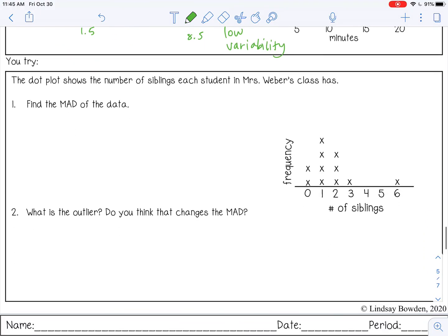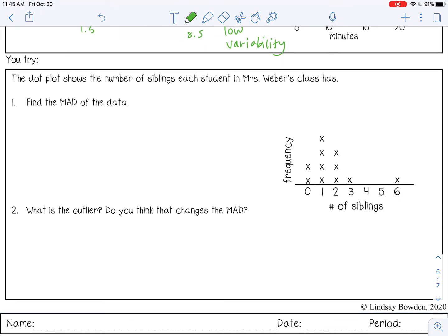One last example. So the dot plot shows the number of siblings each student in Ms. Weber's class has. So we want to find the MAD. So I'm going to list out the numbers, I'm going to find the mean, and then I'm going to find the MAD. Pause the video now and try that.